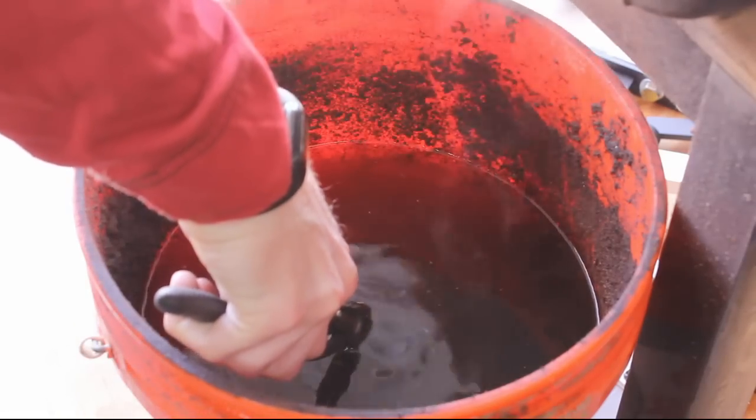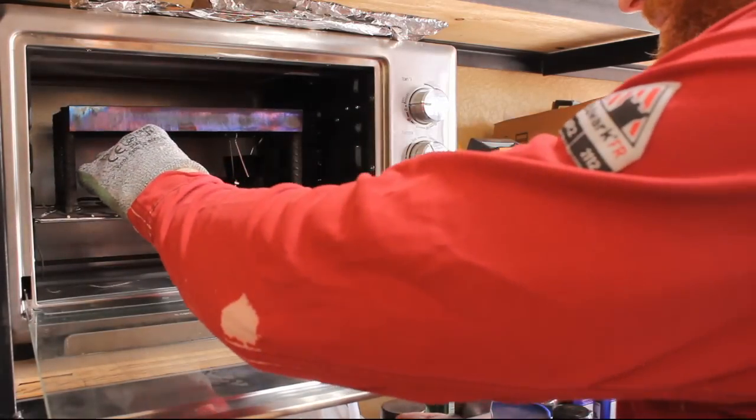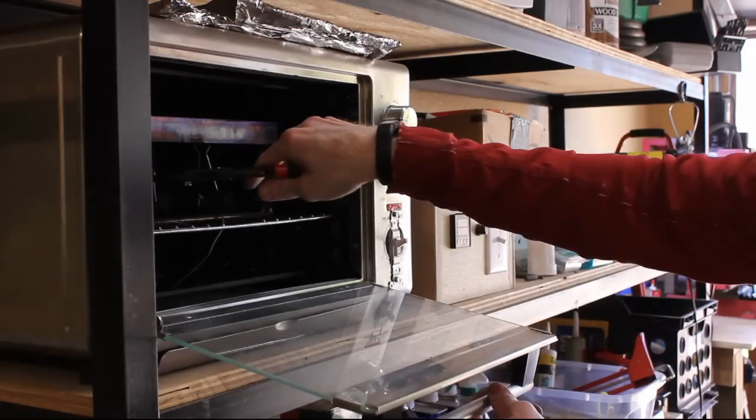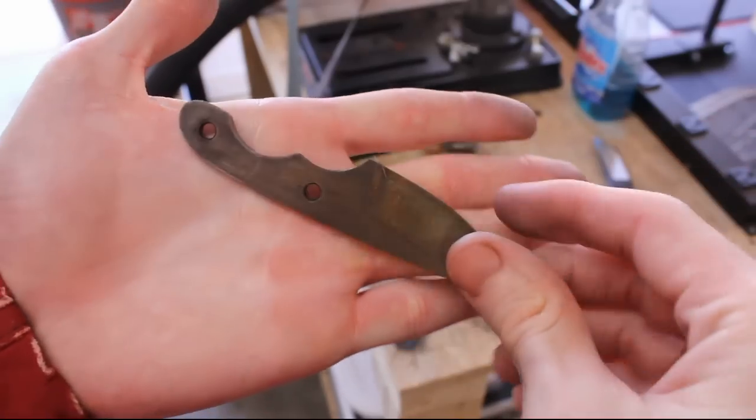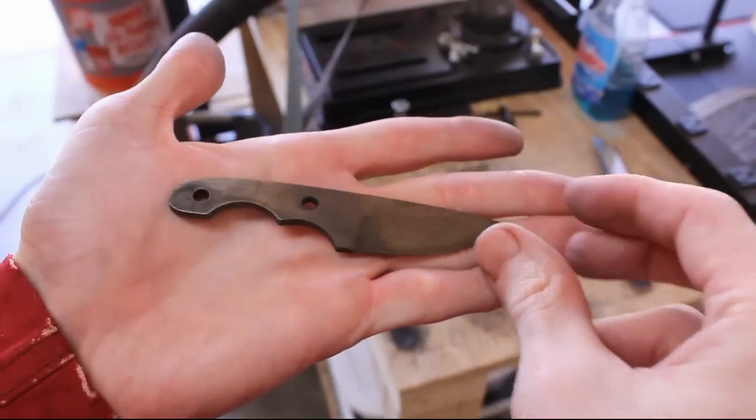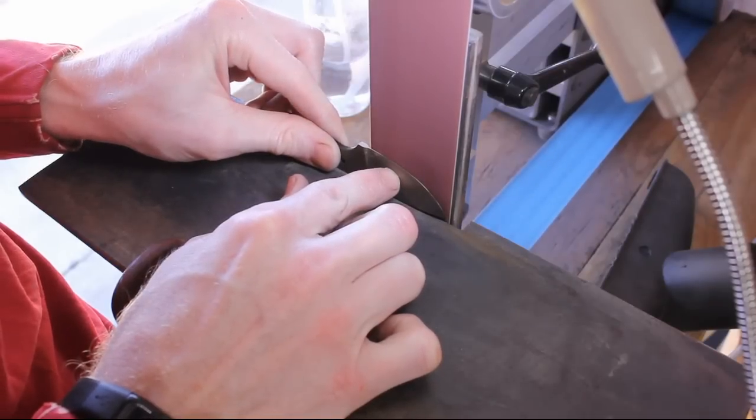The first temper cycle is done. I'll take the blades out, cool them to room temperature, put them back in, do another one and a half to two hour cycle, cool to room temperature, and this is what we got. So that was two cycles at around 408 degrees Fahrenheit.